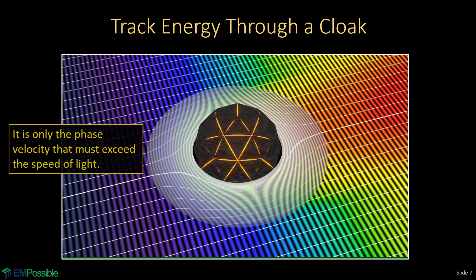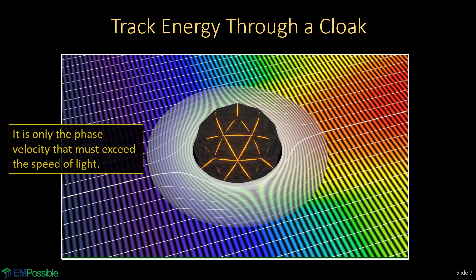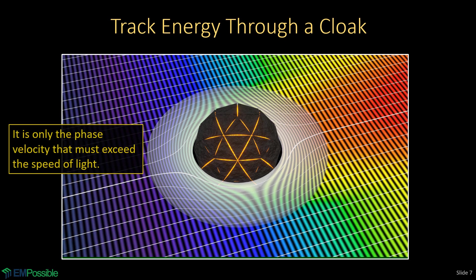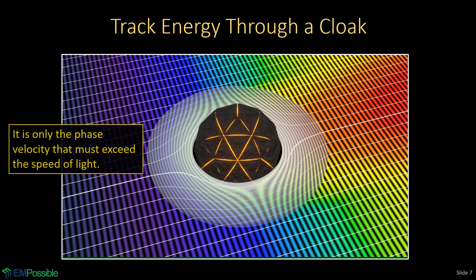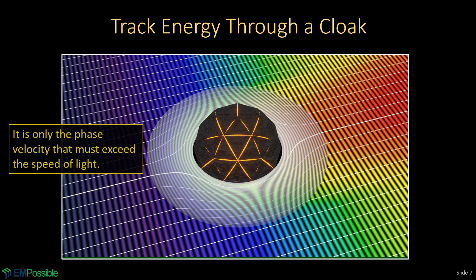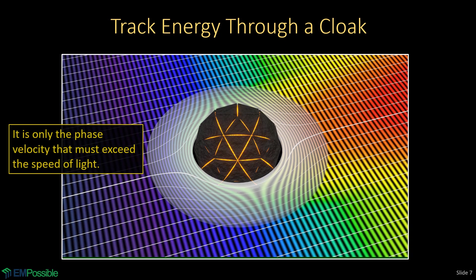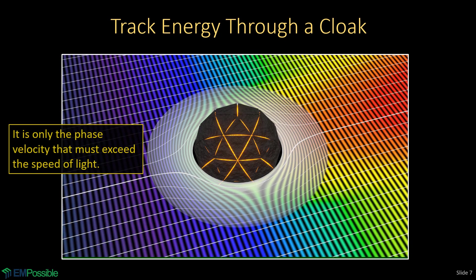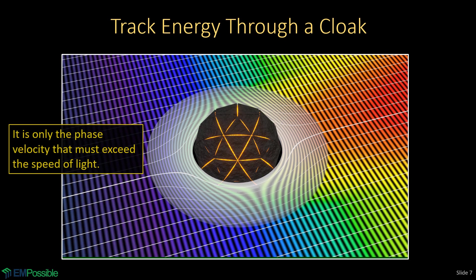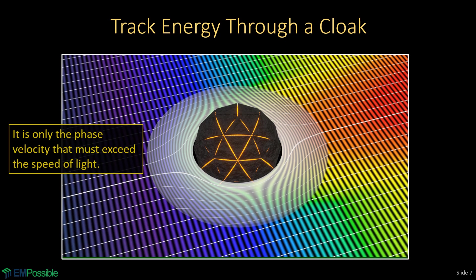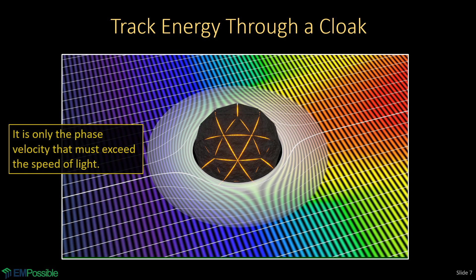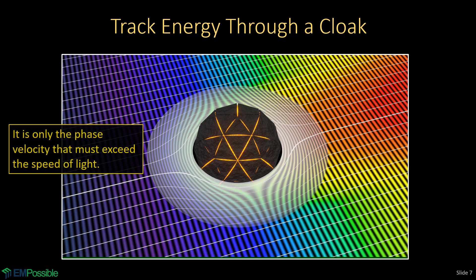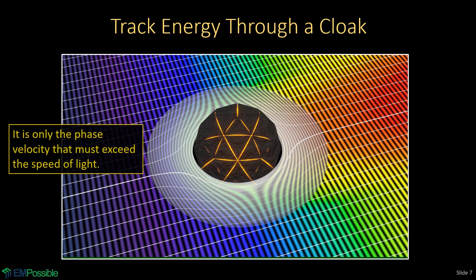If it seems magical that phase velocity can exceed the speed of light, remember: phase velocity is not actual stuff. Energy velocity is actual stuff. Phase is this abstract, mathematically defined point. In electromagnetics, phase velocity exceeds the speed of light all the time — for example, the phase velocity of modes in a metallic rectangular waveguide routinely exceeds the speed of light. However, the energy velocity of those modes certainly does not.